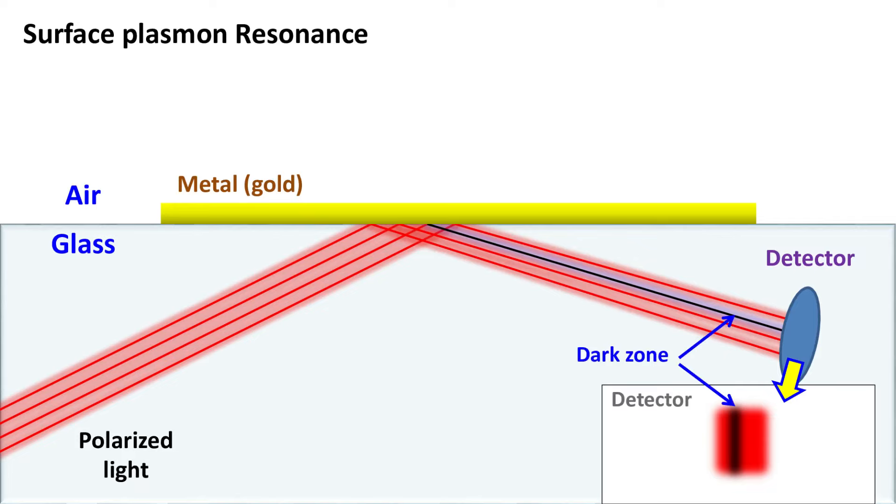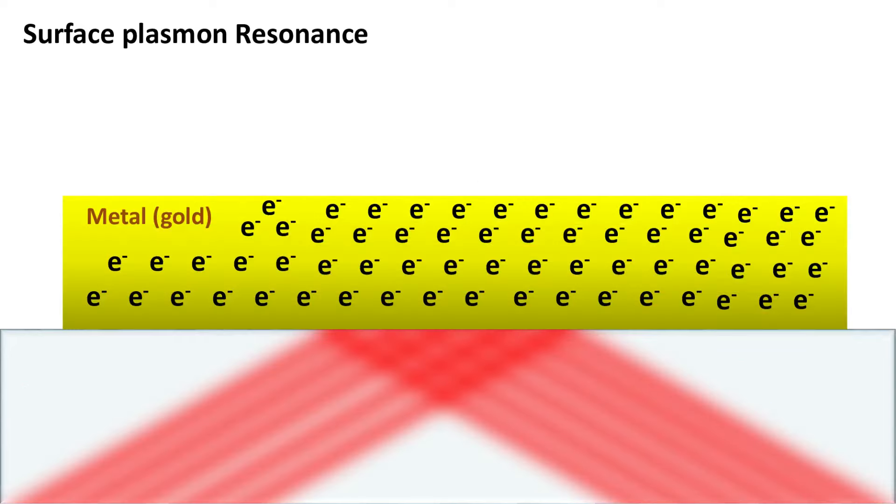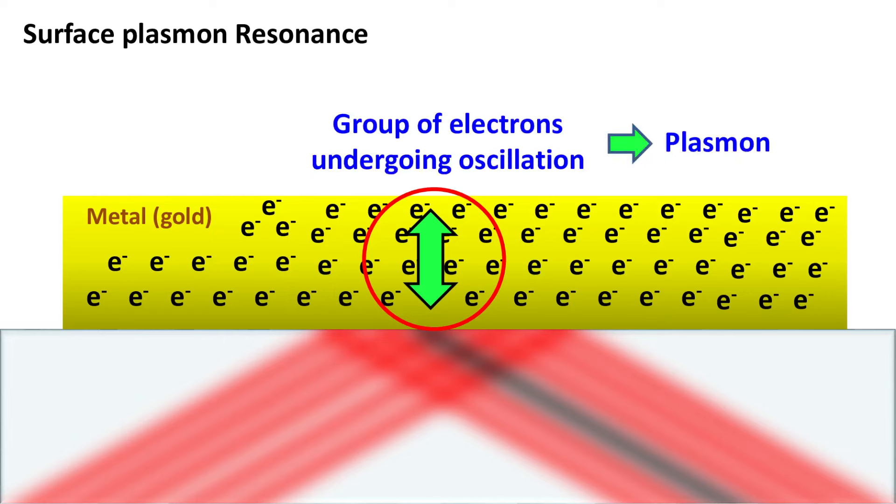This absorption of light is carried out by the electrons present in the metal. Because of absorption of energy, the electrons start oscillating. Remember, it is not a single electron but a group of electrons that collectively absorbs the energy of light. These groups of electrons undergoing oscillation because of energy absorption is called a plasmon.